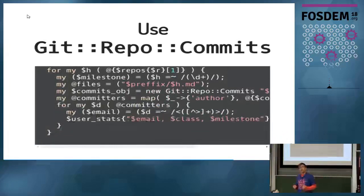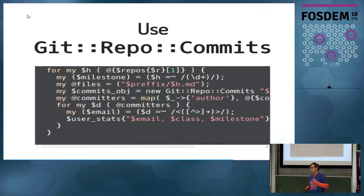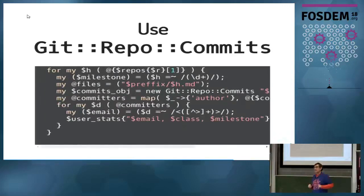Interestingly, I also use Perl for learning analytics. I published to CPAN a module called Git::Repo::Commits that examines commits — the author, the date, and so on — so I can get nice statistics. This is what people call learning analytics, and lots of people talk about it but very few do it, precisely because the platform most people use — Moodle — usually doesn't allow it. Most universities close the Moodle API for security reasons.